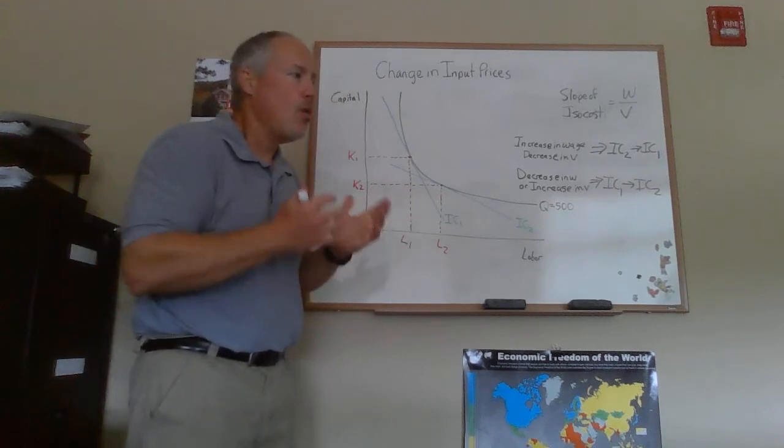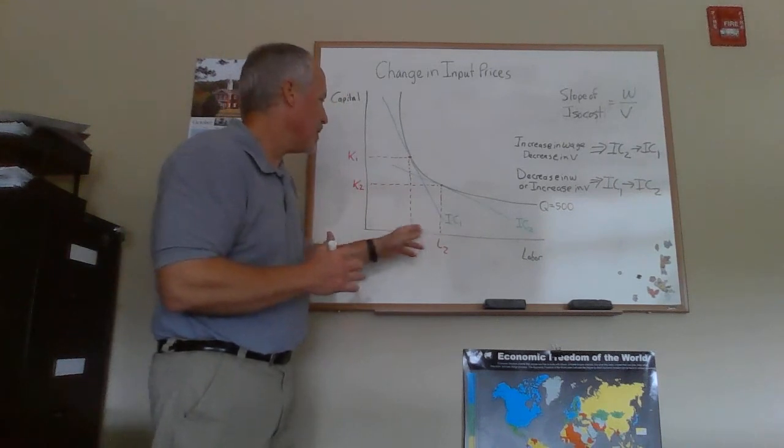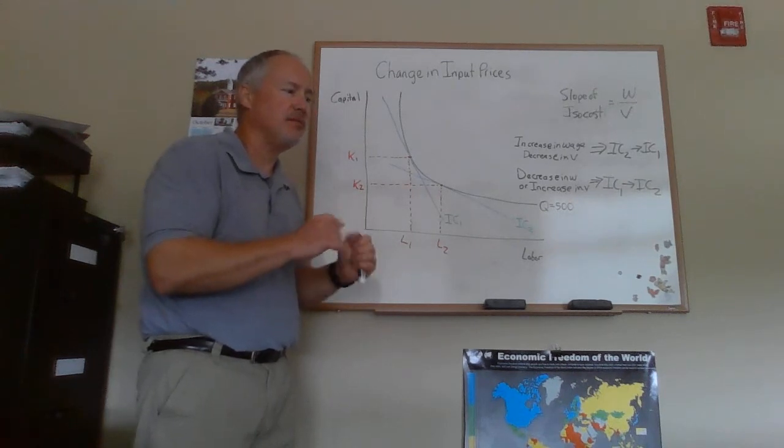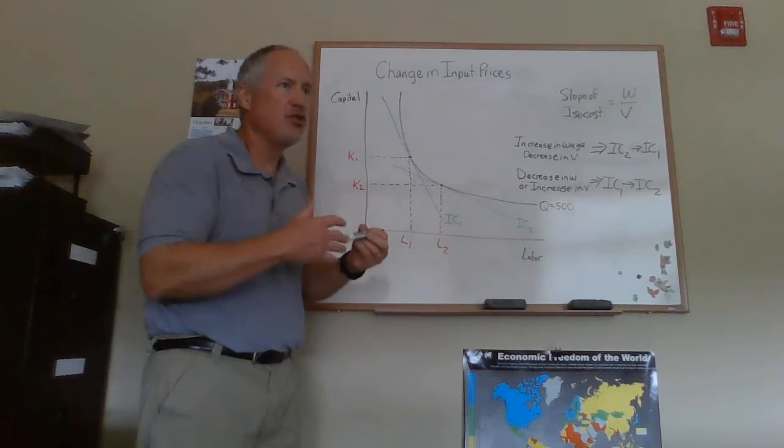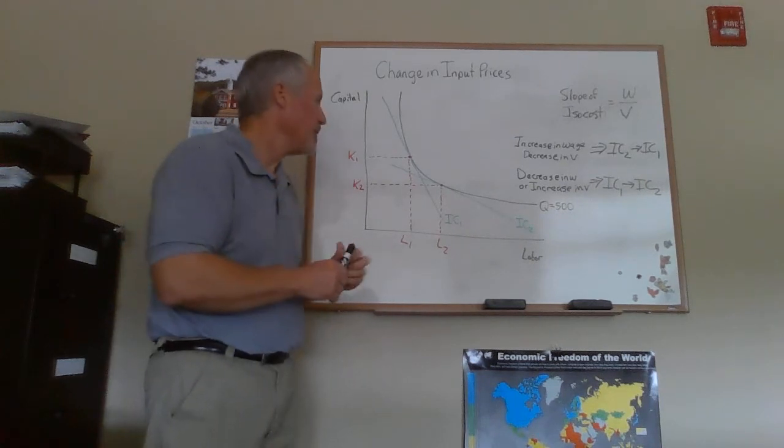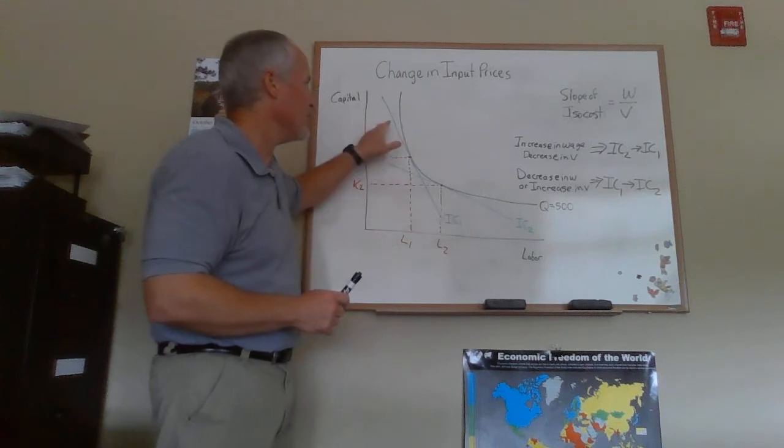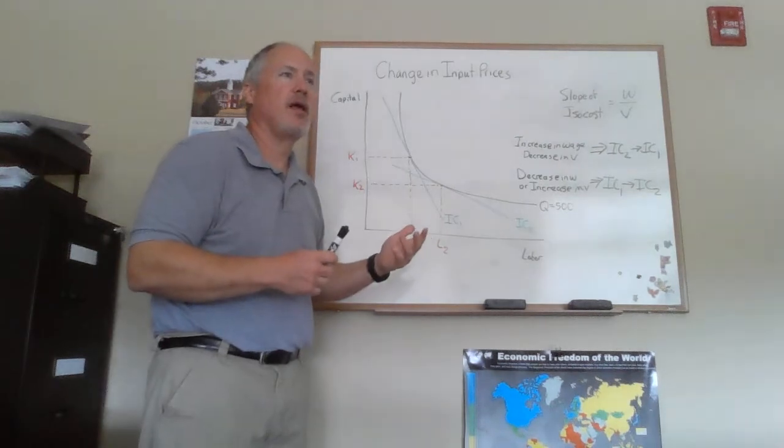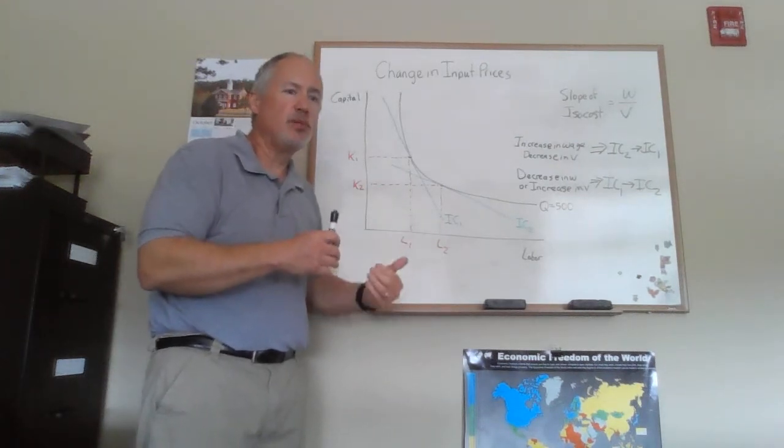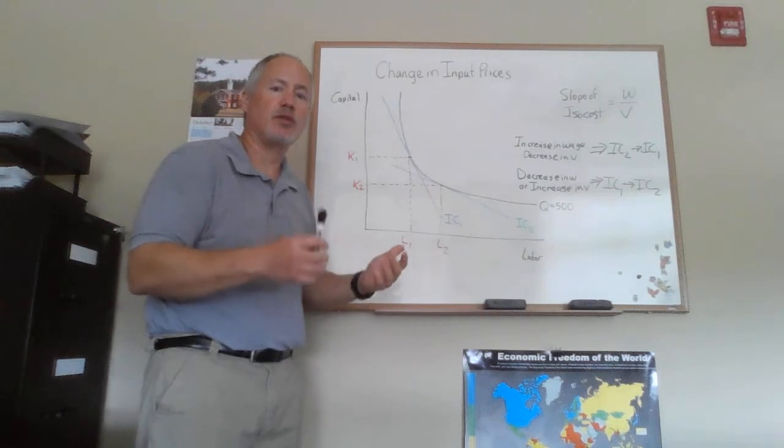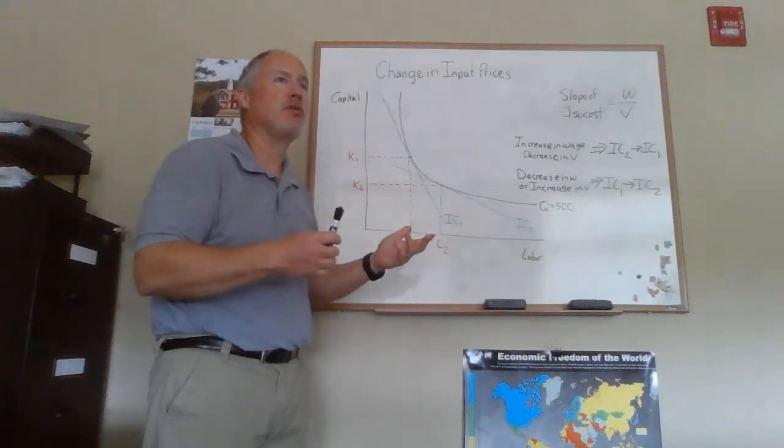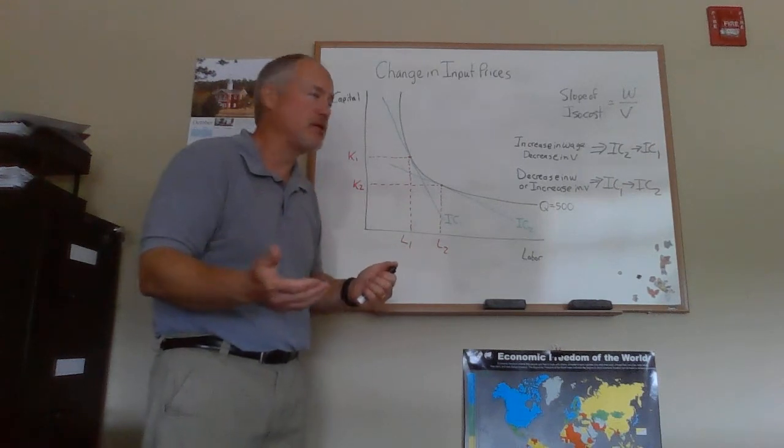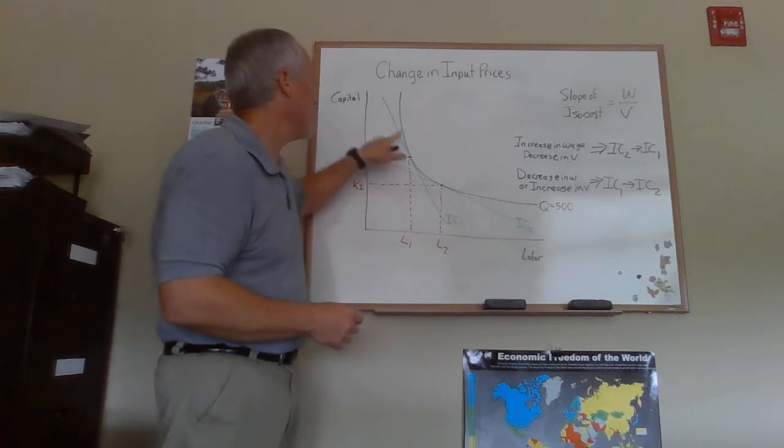Once we've got that, the response of the firm in terms of using inputs to minimize cost is just sort of what you would expect in terms of substitution. So please look at IC2 to IC1. That's for instance an increase in the wage. If the wage goes up, now all of a sudden capital becomes a cheaper way for the firm to try to produce output. So we would sort of expect that they would want to use more capital and less labor because labor is more expensive.